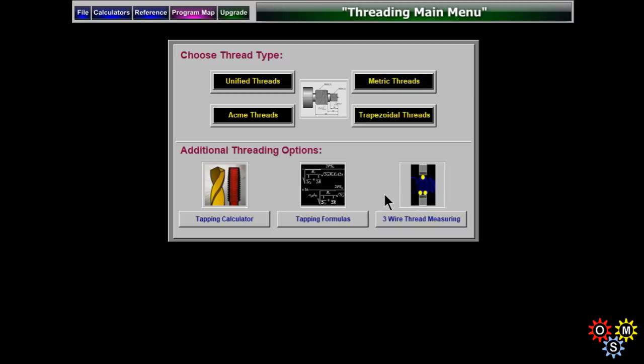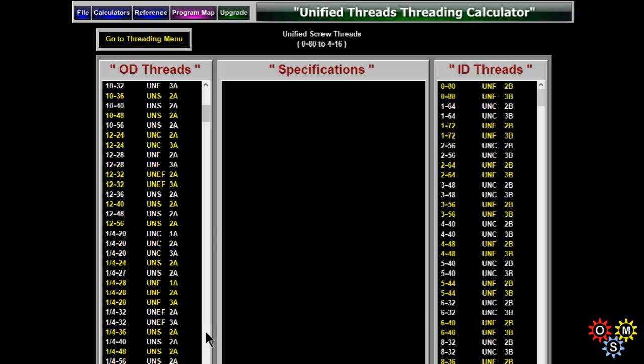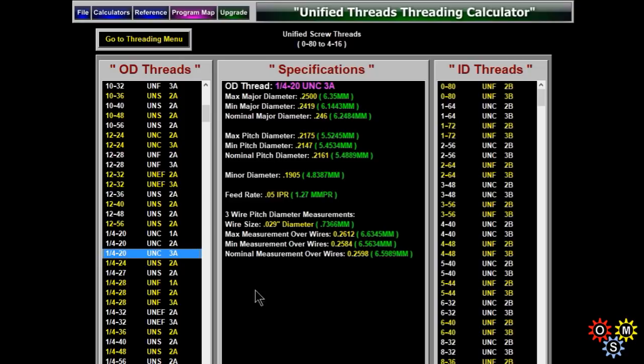Going back to the basic threading menu. We'll just select, look around and select the SAE sizes. We've got OD threads on the left, ID threads on the right. And let's look at quarter 20, quarter 23A. Pretty much there are all the information you might need.